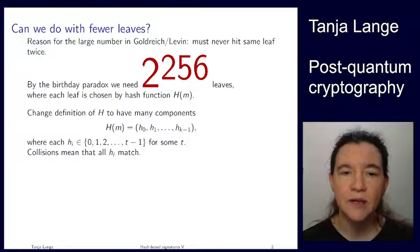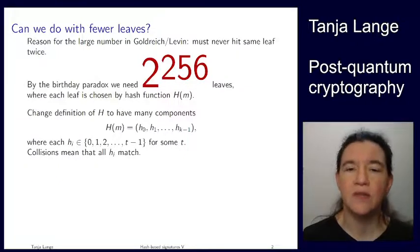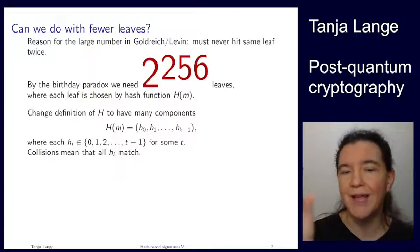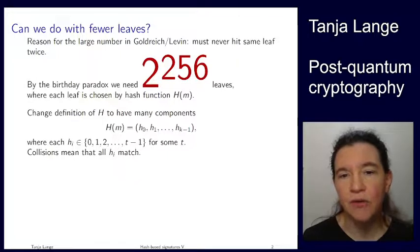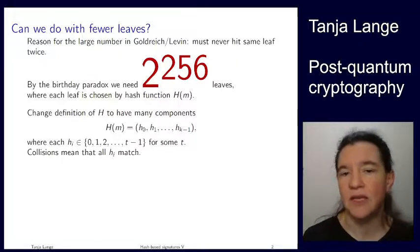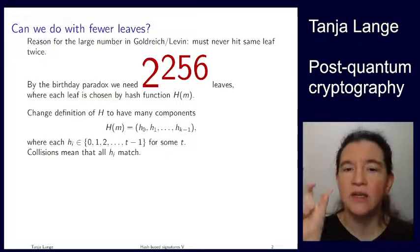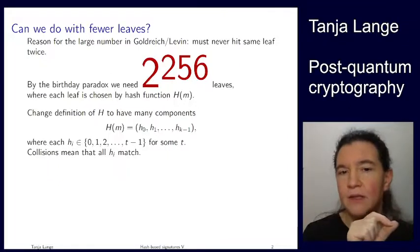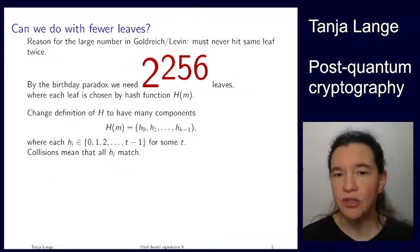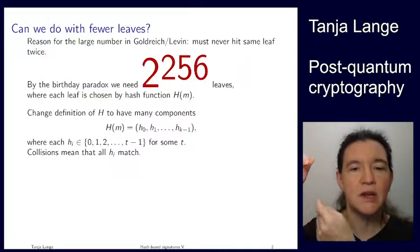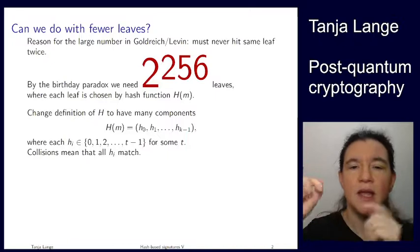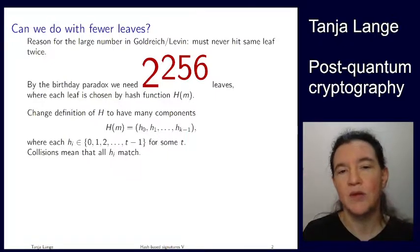And so what we have here is a hash function. Instead of having bits as entries, we now have the numbers between 0 and t minus 1. So if t is a power of 2, you can just say it's 16, then you're taking 4 bits at a time. So the hash function hasn't changed so much, but we're interpreting it in a different way. So each of these positions now has t different values.